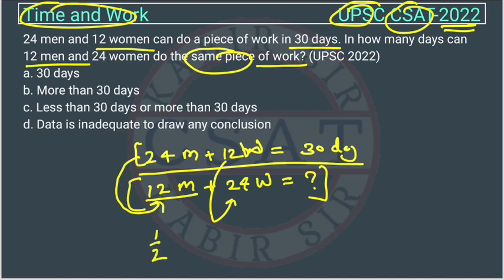But here the women are becoming twice. But suppose this would have been 6 women and 12 men, so what would have been the answer? The answer would be double of this, because we reduce the workforce, so it will get doubled.